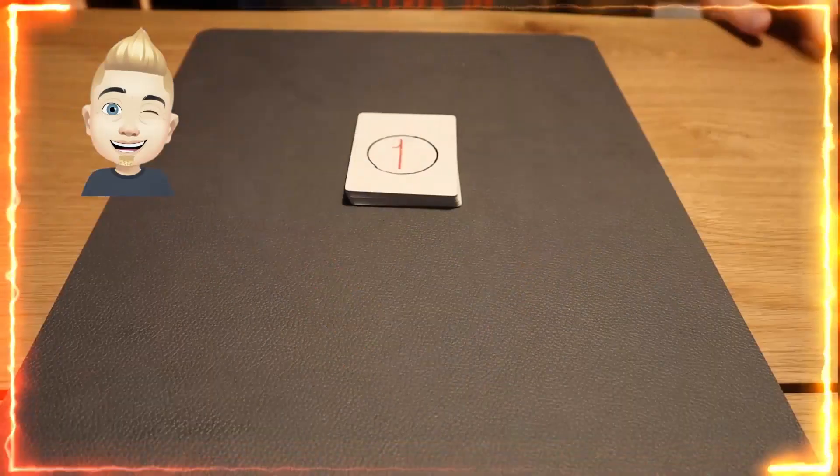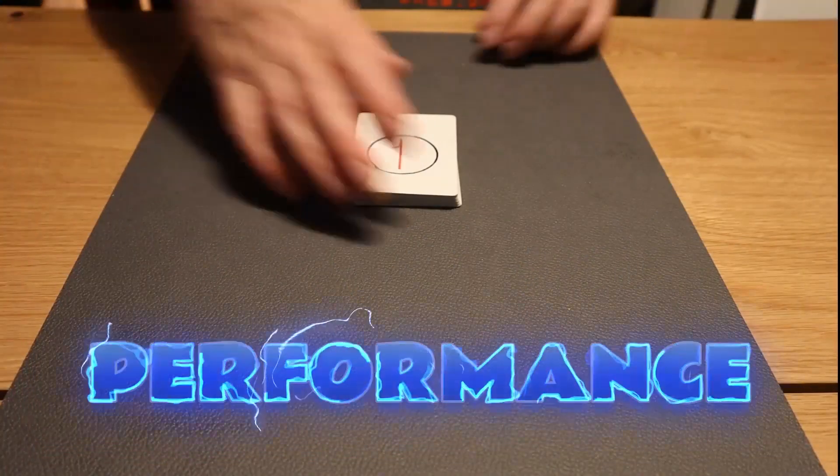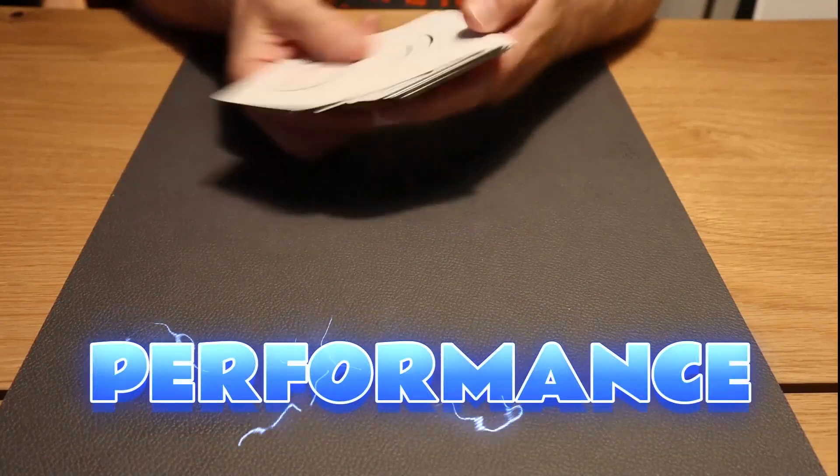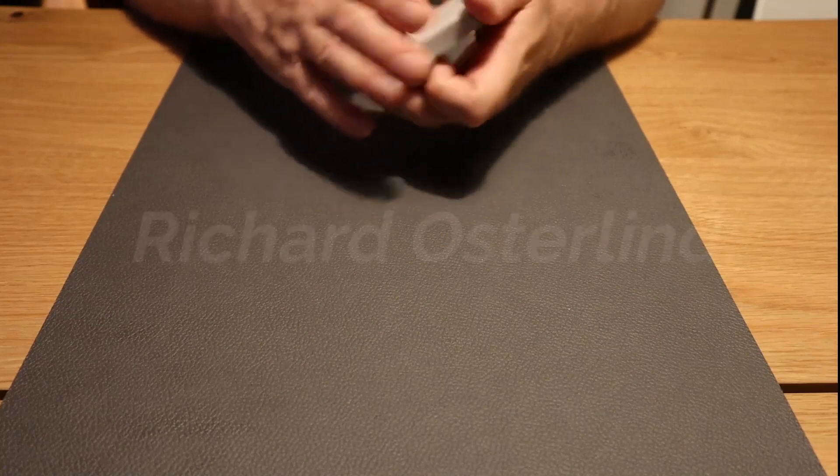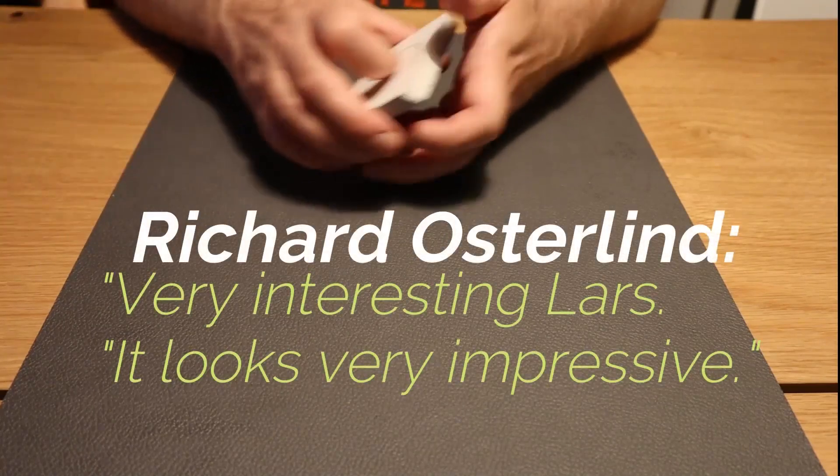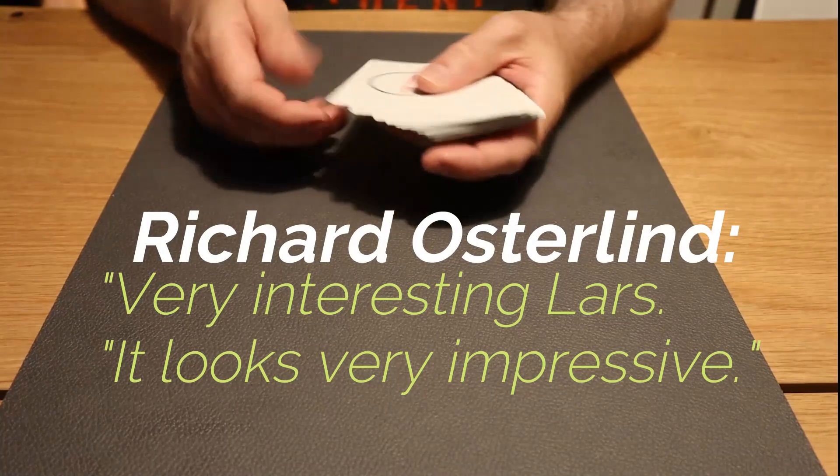Hi, this is Lars Neville from Neville Magic and this is my friend Henrik. Let me show you something. I have some cards here with the numbers 1 to 33. I want you to name a number from 34 to 99. Let's say 51.